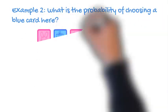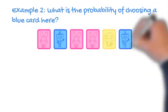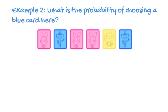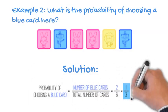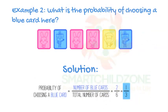Example 2, what is the probability of choosing a blue card here? The probability of choosing a blue card equals number of blue cards over total number of cards, which equals 2 over 6. Final answer is 1 over 3.